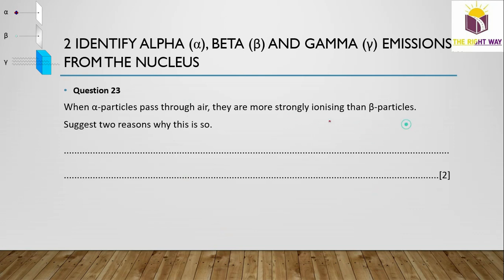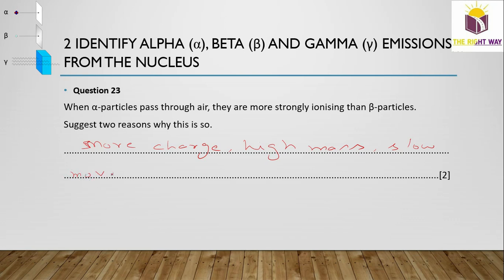Question on ionization: When alpha particles pass through air, they are more strongly ionizing than beta particles. Two reasons: alpha particles contain more charge (plus 2 vs minus 1), and they have a higher mass, making them slower-moving. Due to their greater mass, they are slow-moving and interact more with surrounding atoms.